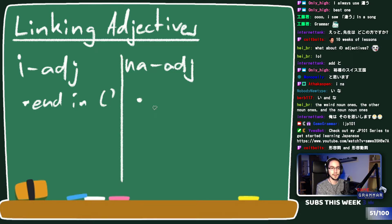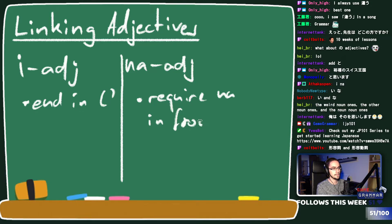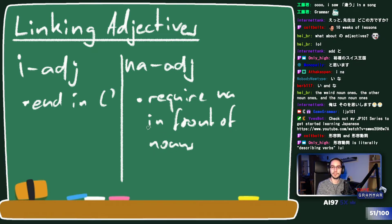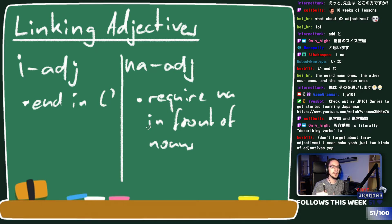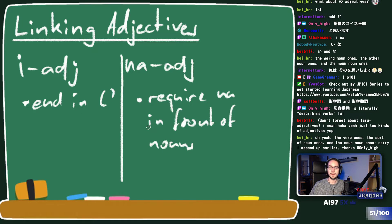Na-adjectives require 'na' in front of nouns - that's basically the main difference. They're both adjectives, both words that describe nouns. The reason why na-adjectives are called keiyodoshi is because they rely on the verb or pseudo-verb 'da' to actually be used with nouns. You rely on the copula 'da' and 'na' to use keiyodoshi as describing words.